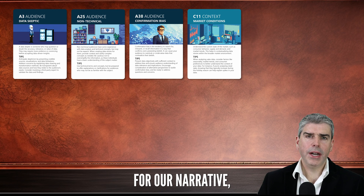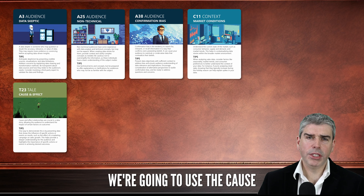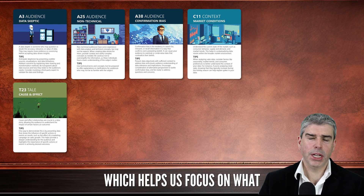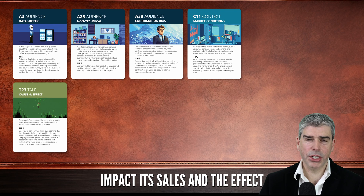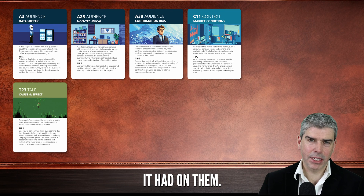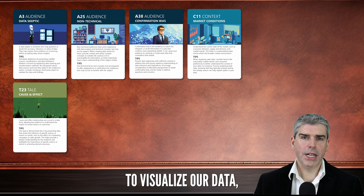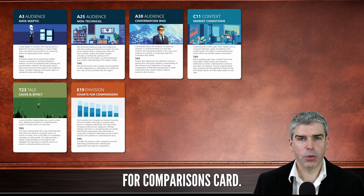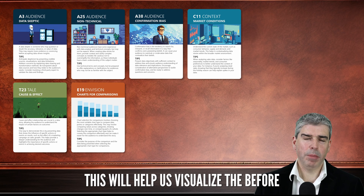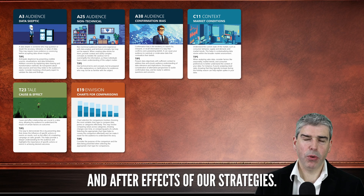For our narrative, we're going to use the Cause and Effect card, which helps us focus on what specific marketing strategies impacted sales and the effect it had on them. To visualise our data, we went with the Charts for Comparisons card. This will help us visualise the before and after effects of our strategies.